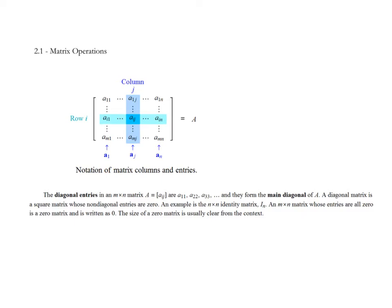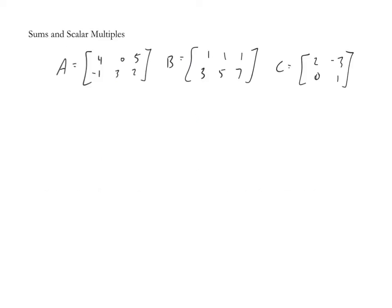We refer to the diagonal entries as the entries on the main diagonal: a11, a22, a33, etc., from top left down to bottom right. A diagonal matrix is a square matrix whose non-diagonal entries are zero. An example is the n by n identity matrix. Any matrix with zeros everywhere is called a zero matrix.